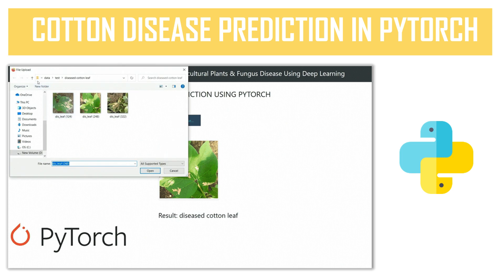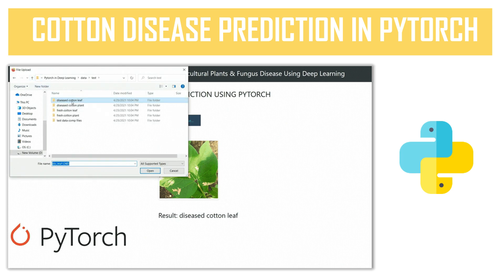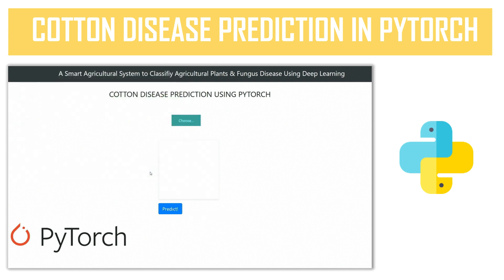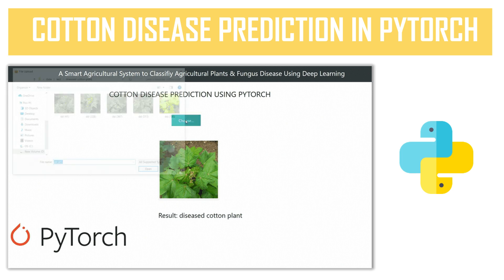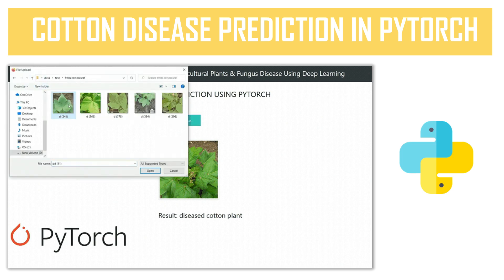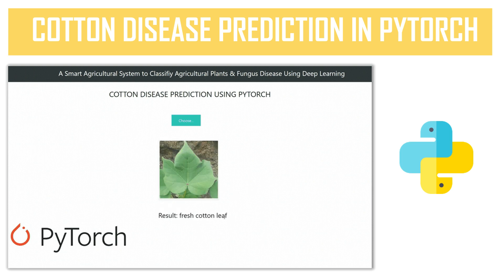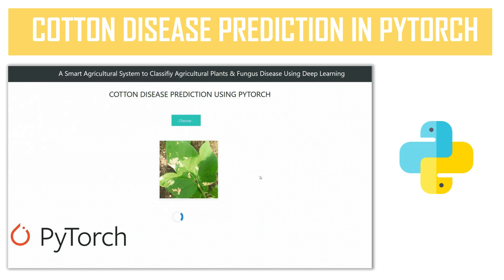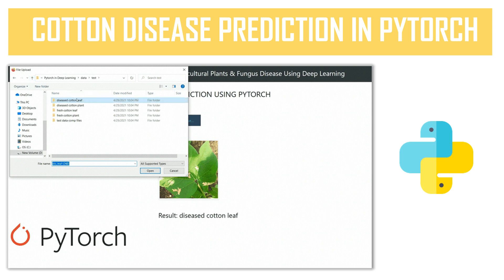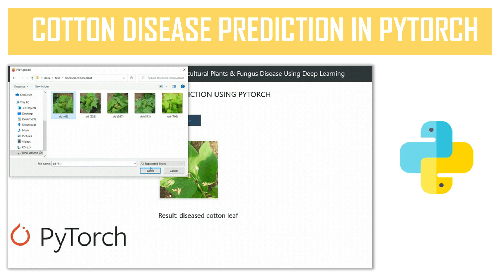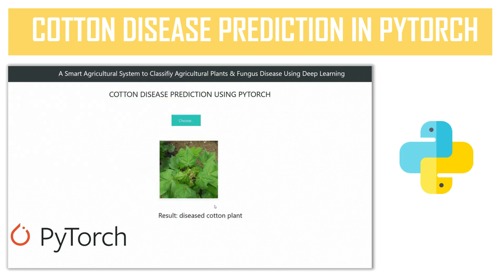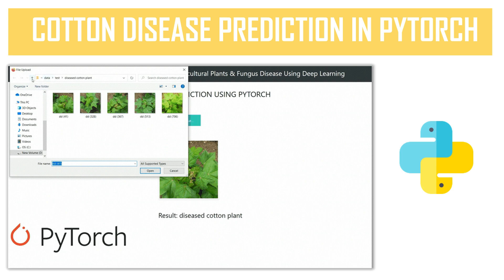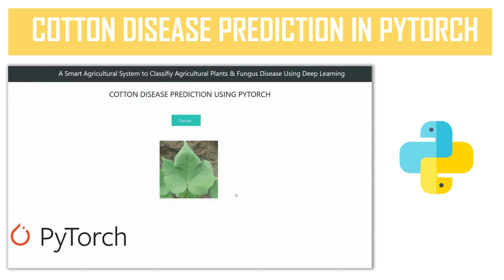Number six is based on agricultural plant fungus disease classification. You can make a project that will help you predict whether your plant or leaf is affected by fungus or not. In this case I am using the cotton leaf dataset. This is the only video on this topic on my YouTube channel, and it is based on PyTorch, which is developed by Facebook AI Research Lab. Please check it out.